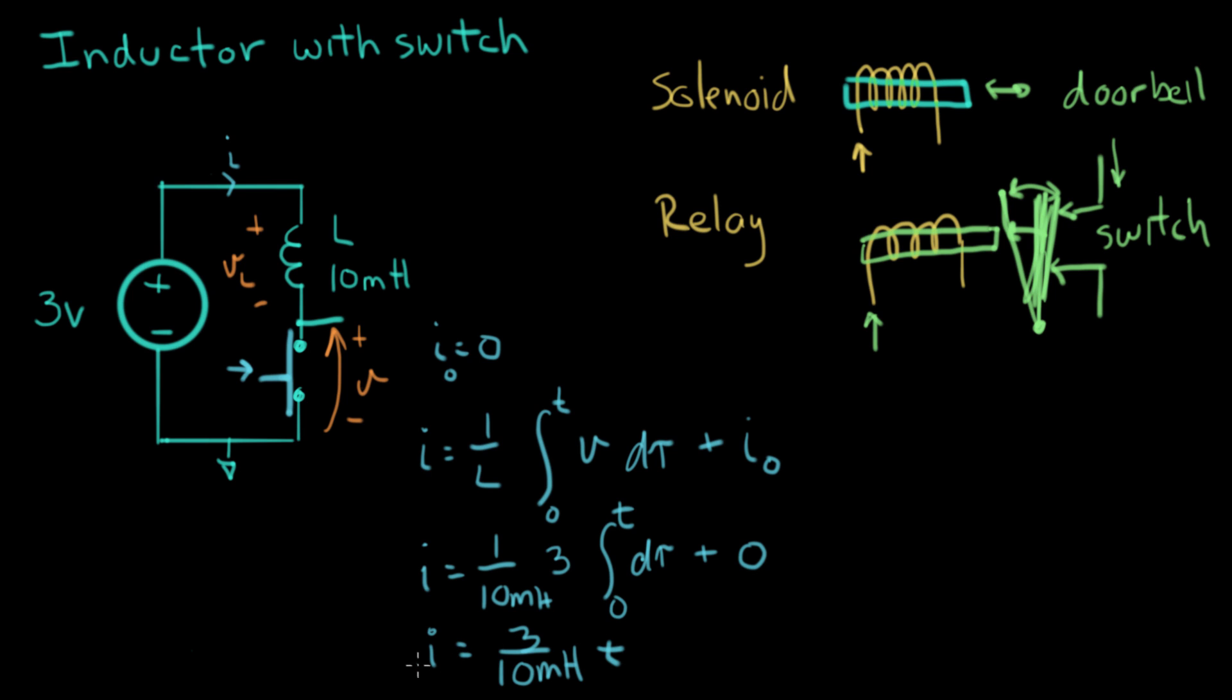So what we have here, just like we did before when we had the switching power supply, just like we had before, we're going to get a current that has a ramp that looks like that. The slope of that is three over 10 millihenries, which equals 300 amps per second. So, oh my goodness, this current is going up really fast. That's the slope of that current right there. This is going up really fast. And that's what it does.